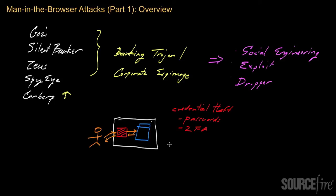By stealing mouse location data or screen contents, the malware can capture passwords entered via graphical interfaces. These credentials can be used for many purposes beyond banking — for example, stealing social networking account information. For corporations, we've seen malware steal VPN passwords and VNC remote login credentials. This behavior strongly suggests that corporate espionage is a very important use case for these man-in-the-browser session Trojans.